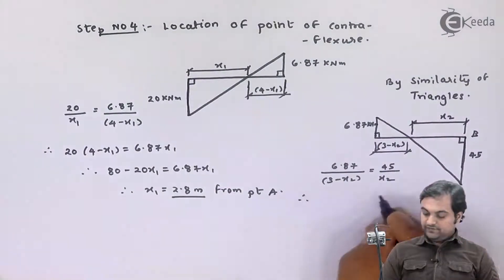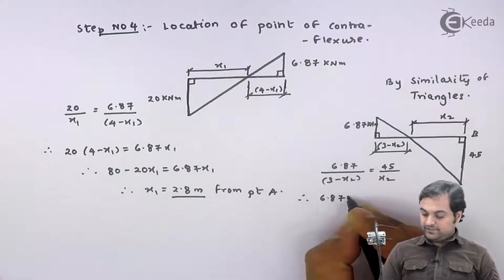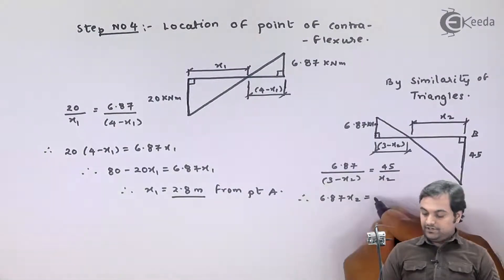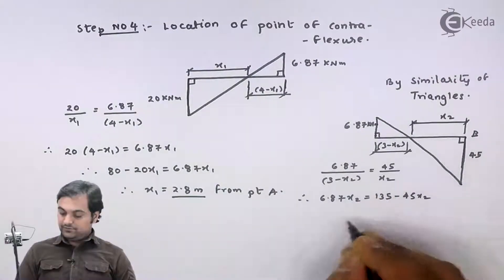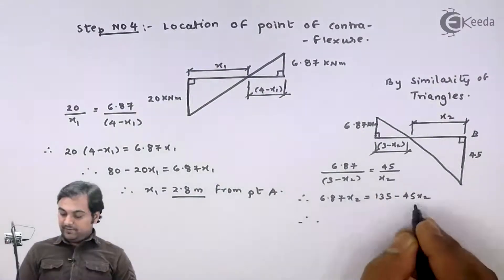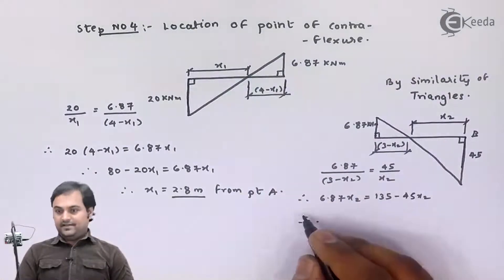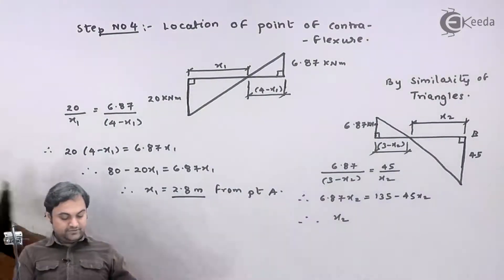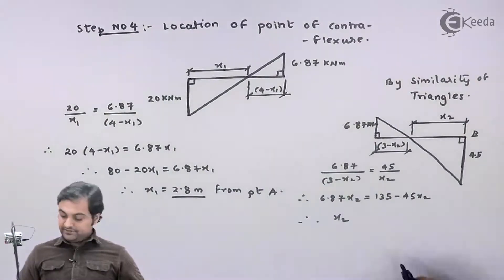By similarity of triangles: 6.87 × x2 = 45 × (3 − x2), which gives 6.87x2 = 135 − 45x2. Bringing x2 terms to one side and solving, we get x2 = 0.4 meters from point B.